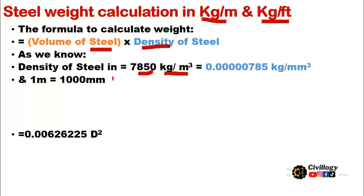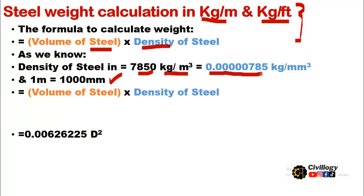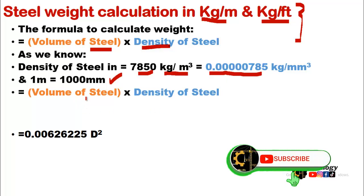Here is the most important point: these two formulas are used when the diameter of the bar is given in millimeters. When the diameter is in millimeters, you will use these two formulas. So we will convert the density into millimeter units and proceed.